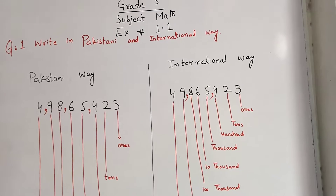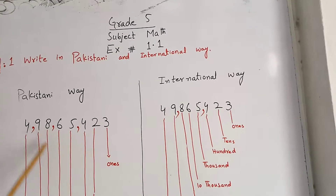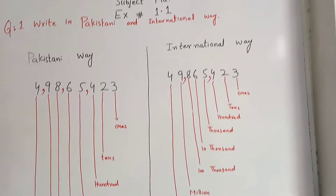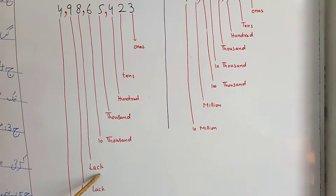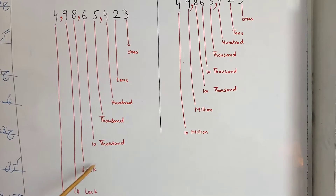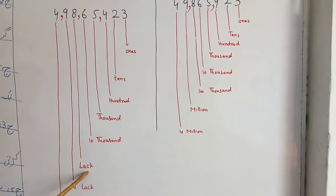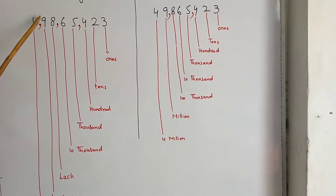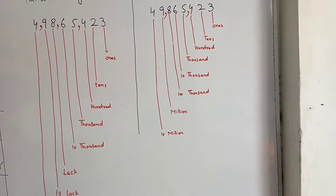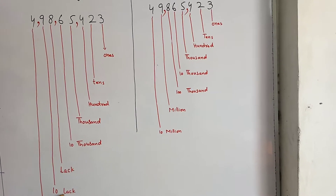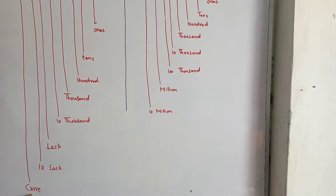After 10,000, our value will change in the Pakistani way. In the Pakistani way, the next value after 10,000 is called lakh. After lakh, the next value is called 10 lakh, and then after 10 lakh the value is called crore.